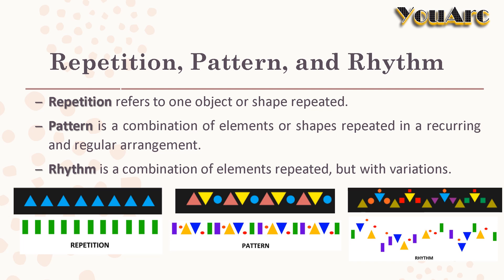I see many students are getting confused with these three because they are similar to each other and related to each other as well, and still confusing. So let's see in detail. A repetition refers to one object or shape repeated — the keyword is 'one object or shape.' Pattern is a combination of elements or shapes repeated in a reoccurring or regular arrangement.